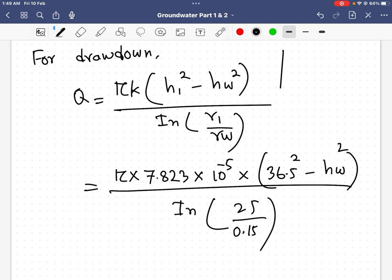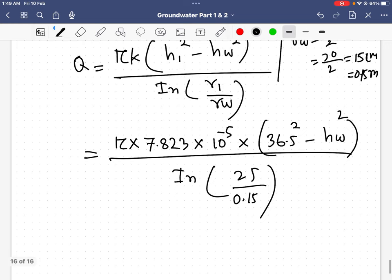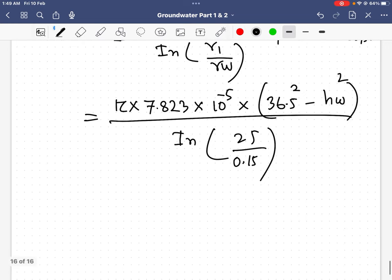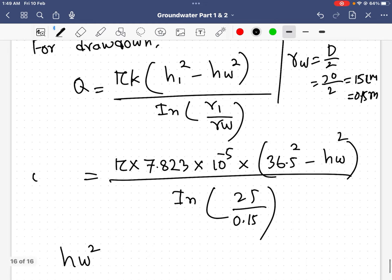And rw is 0.15 meters, because the diameter is 30 centimeters, so rw equals d by 2, which is 30 divided by 2, equals 15 centimeters or 0.15 meters. If I calculate here, I will get hw squared. My Q is 0.025.